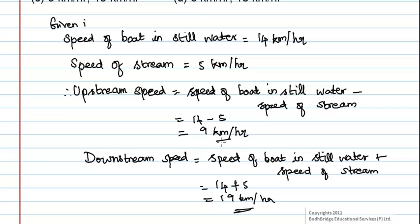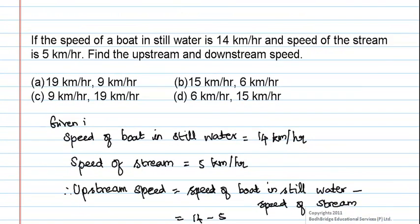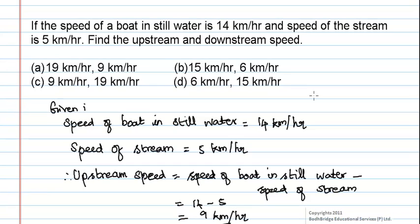Hence, the upstream and downstream speed is option C: 9 and 19 kilometers per hour.